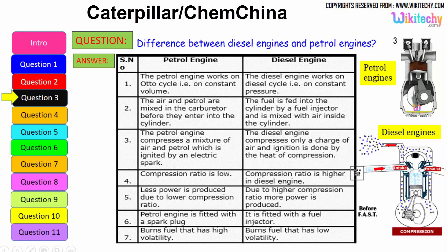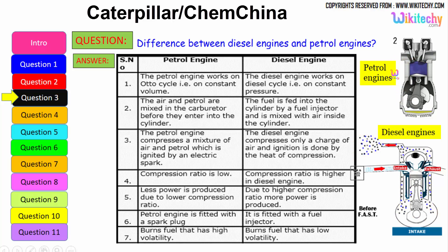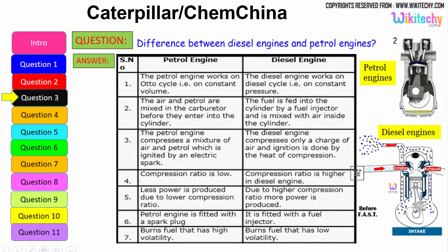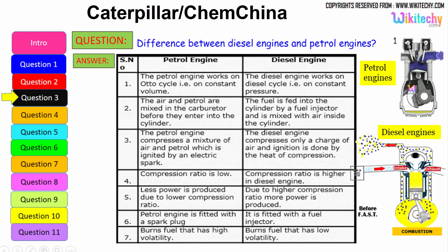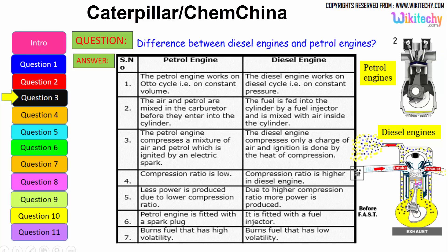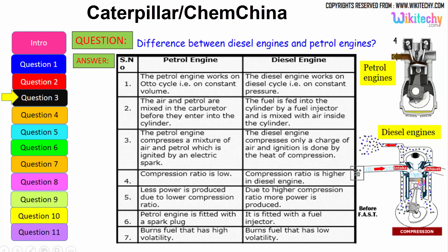The air and the petrol are mixed in the carburetor before they enter into the cylinder. For a diesel engine, the fuel is fed into the cylinder by a fuel injector and is mixed with air inside the cylinder. The petrol engine compresses a mixture of air and petrol which is ignited by an electrical spark, whereas the diesel engine compresses only a charge of air and ignition is done by the heat of compression.